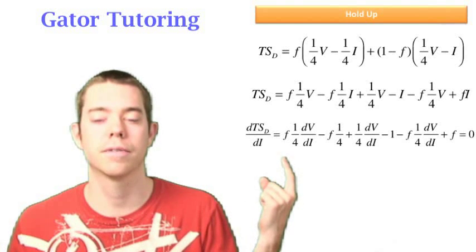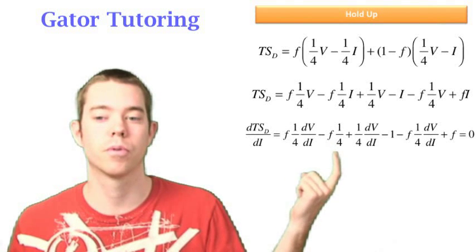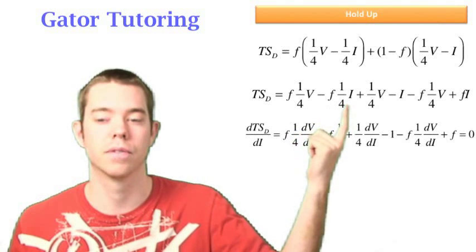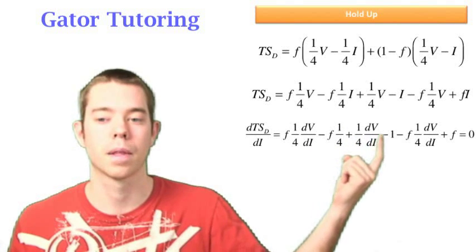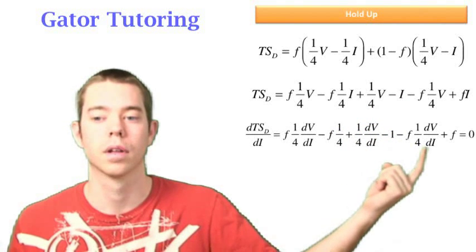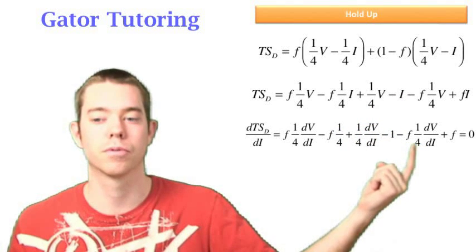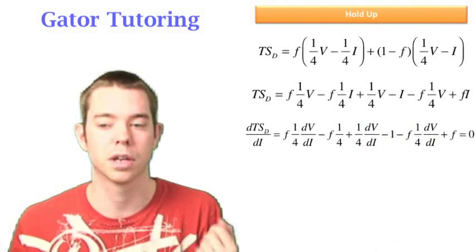So we get F times one fourth dV/dI, minus F times one fourth, because the I falls out in the derivative, plus one fourth dV/dI, minus one because the minus I just becomes minus one. And then we have minus F times one fourth dV/dI, plus F because the FI just becomes F.